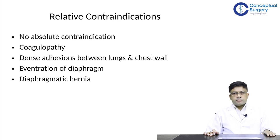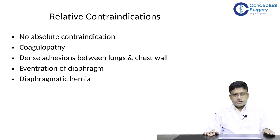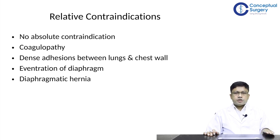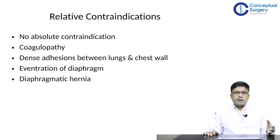There are no absolute contraindications for a chest tube insertion — if it needs to be done, it has to be done. However, one should be careful about certain clinical conditions requiring precautions. If the patient has coagulopathy or is on anticoagulant medications, special attention is required. If there is a history of previous thoracic procedures like thoracotomy, which can lead to adhesions between the lung parenchyma and chest wall, one must take utmost precautions to avoid injuring the underlying lung.